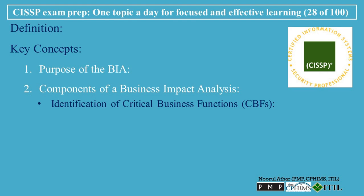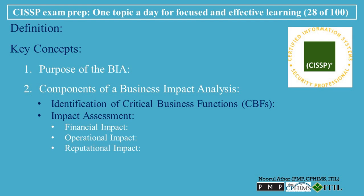Examples of CBFs include Customer Service Operations, Financial Transactions, Supply Chain Management, IT Services, and Regulatory Compliance Processes. The BIA evaluates the potential impact of a disruption on each critical business function. This impact may be measured as Financial Impact (loss of revenue, penalties, fines, or increased costs), Operational Impact (disruption of services, inability to meet customer demand, or delays in production), or Reputational Impact (damage to the organization's public image, trust with customers, and relationships with partners).